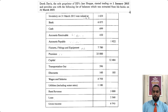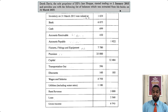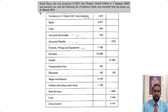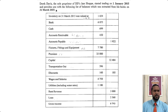Let's take a read of the information. Derek Davis, the sole proprietor of DD's Jam Shop, started trading on 1 Jan 2015 and provides you with the following list of balances extracted from his books on 31st March 2015. So he started trading on 1 Jan 2015 and this list of balances is for 31st March 2015 — only three months have passed, so it's not a full year.